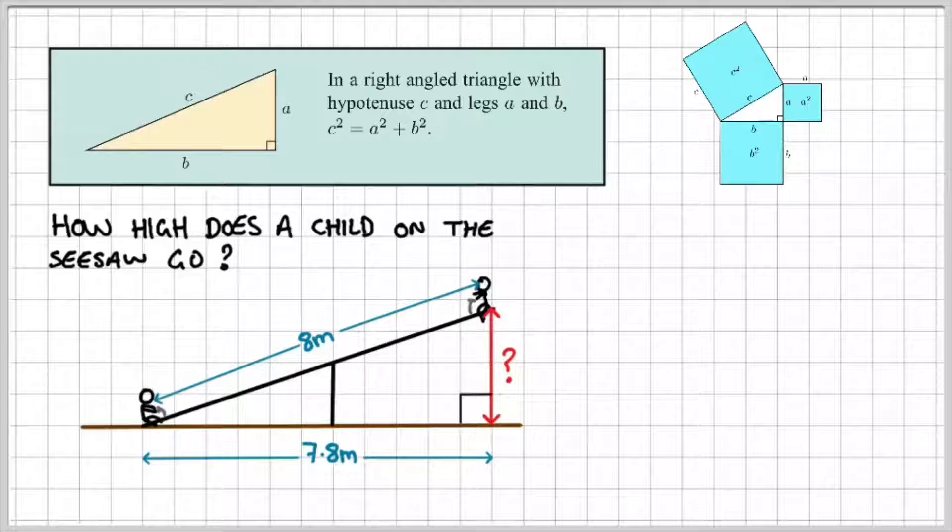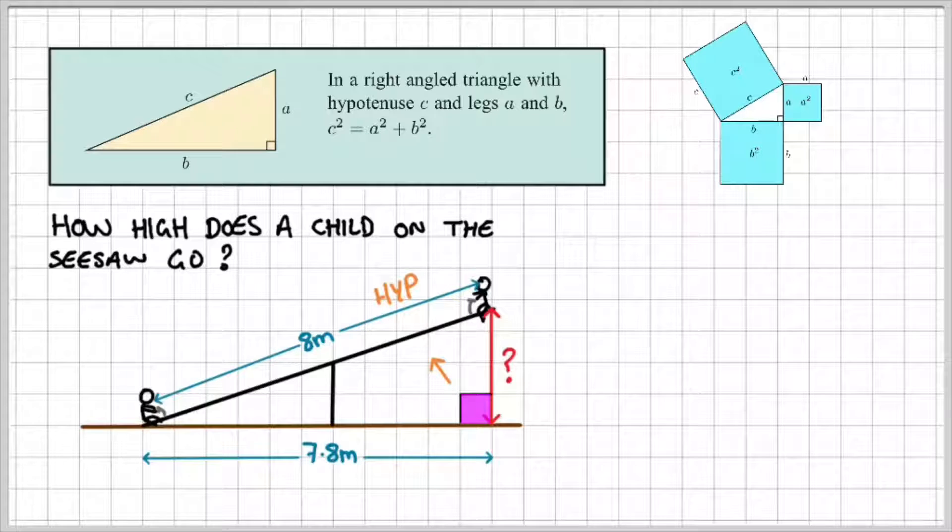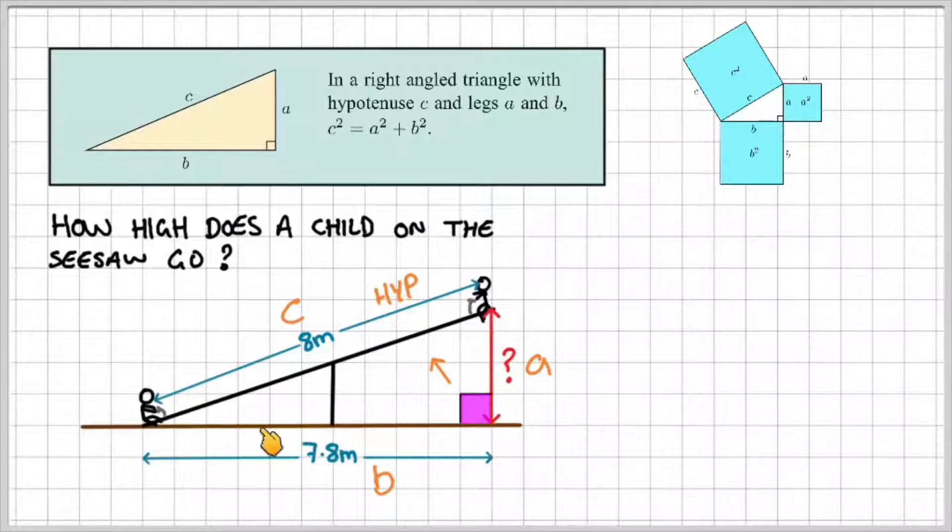We can set this up because we know that we have a right-angled triangle. So we're going to use Pythagoras' Theorem. And if I label this, I know that opposite the right angle is my hypotenuse. So that's going to be my c. And the other two sides are going to be a and b. It doesn't really matter which one's a, which one's b, but we can label them a and b.